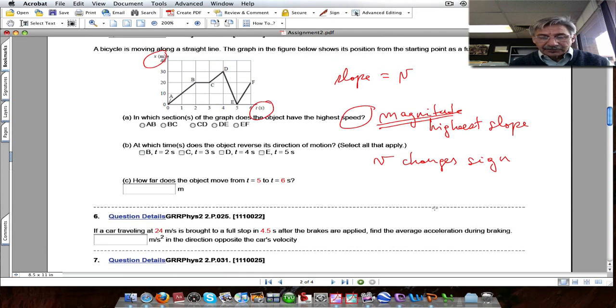And how far does the object move? This is not an area because you read directly from the graph. You read the positions.